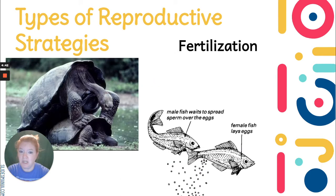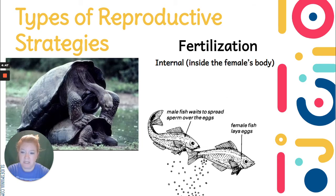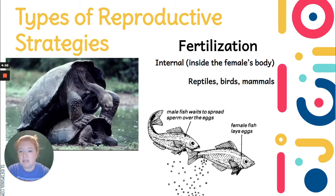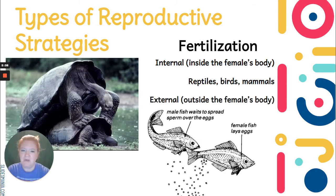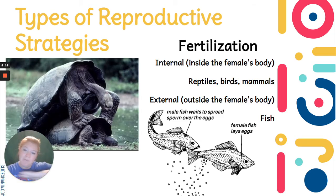Type of fertilization is another reproductive strategy. There's internal fertilization, which occurs inside the female's body — this occurs in reptiles, birds, and mammals. That's a way to keep the developing embryo safe and protected inside the mother's body. A mammal is going to give birth to live young, but reptiles and birds lay eggs. And then there's external fertilization, which occurs outside the female's body — this happens with a lot of fish, where the female lays her eggs and the male swims by and releases his sperm over the eggs.